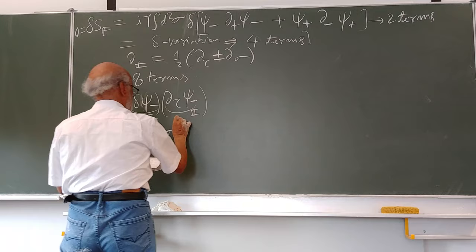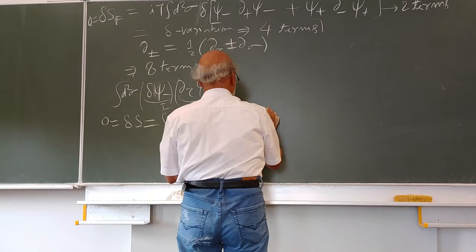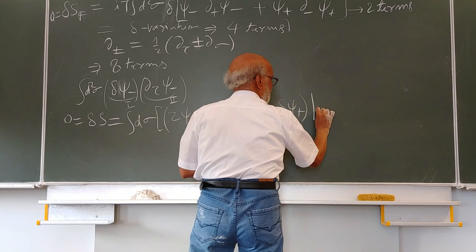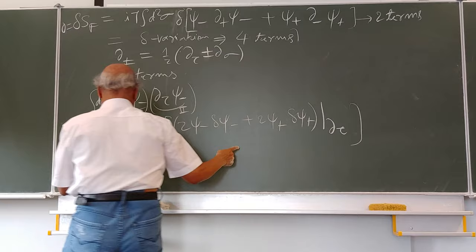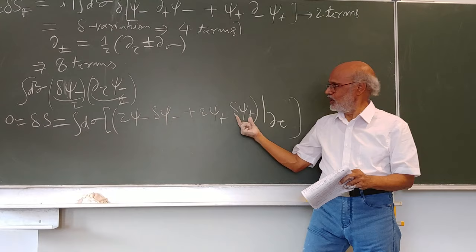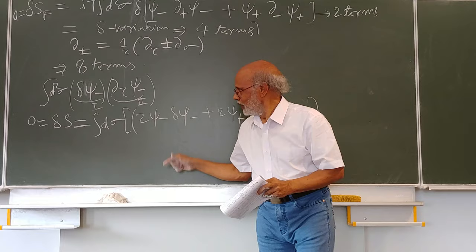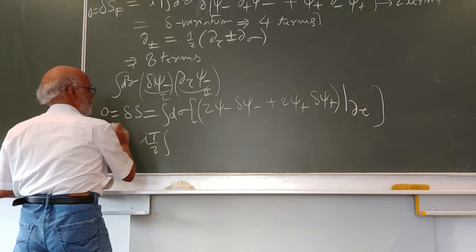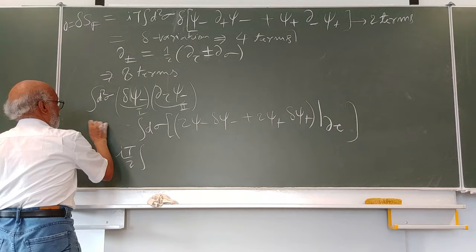As a result, you will have terms of the type: d-sigma times (y psi-minus d psi-minus plus y psi-plus d psi-plus). This term is at the time boundaries. At the time boundaries, delta psi-plus equals zero and delta psi-minus equals zero, so these terms vanish. These are the time boundary terms.